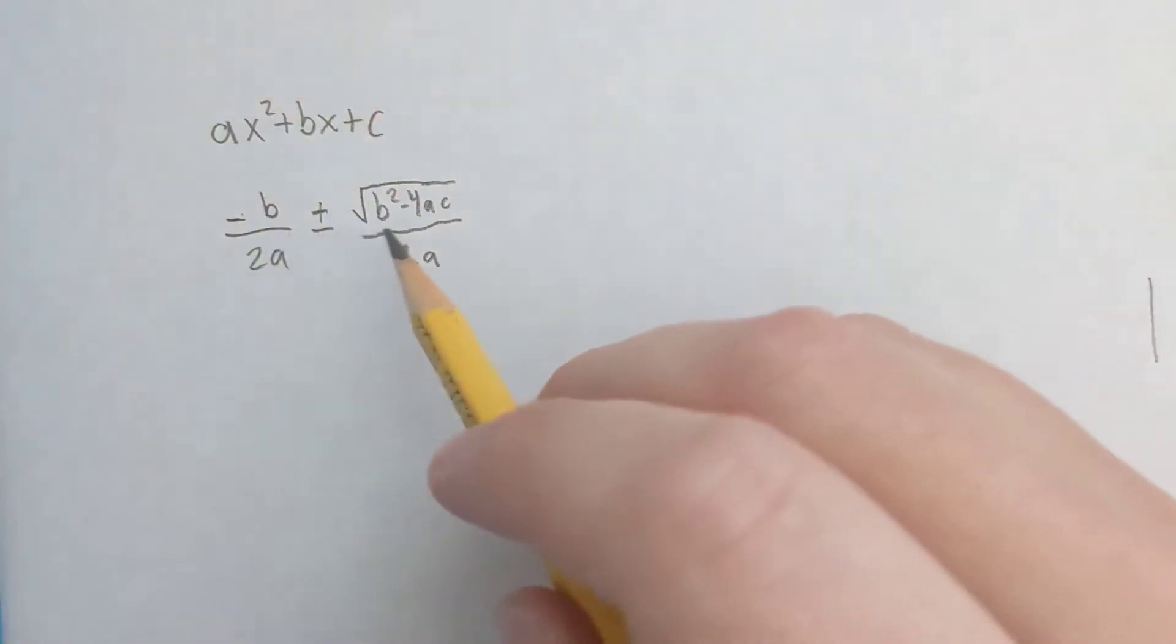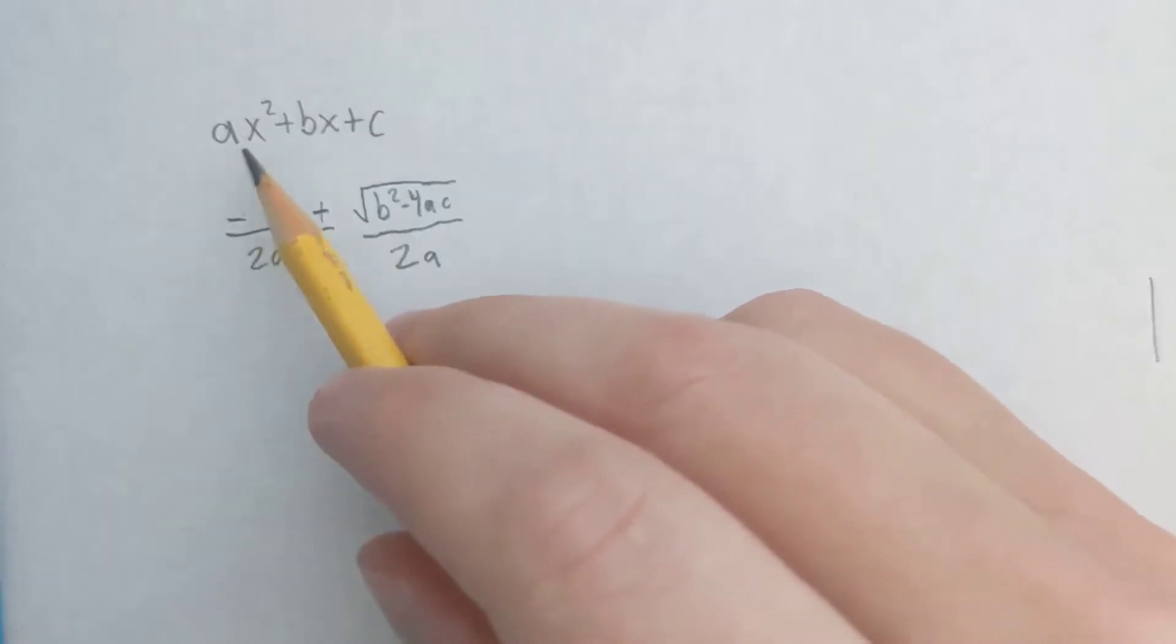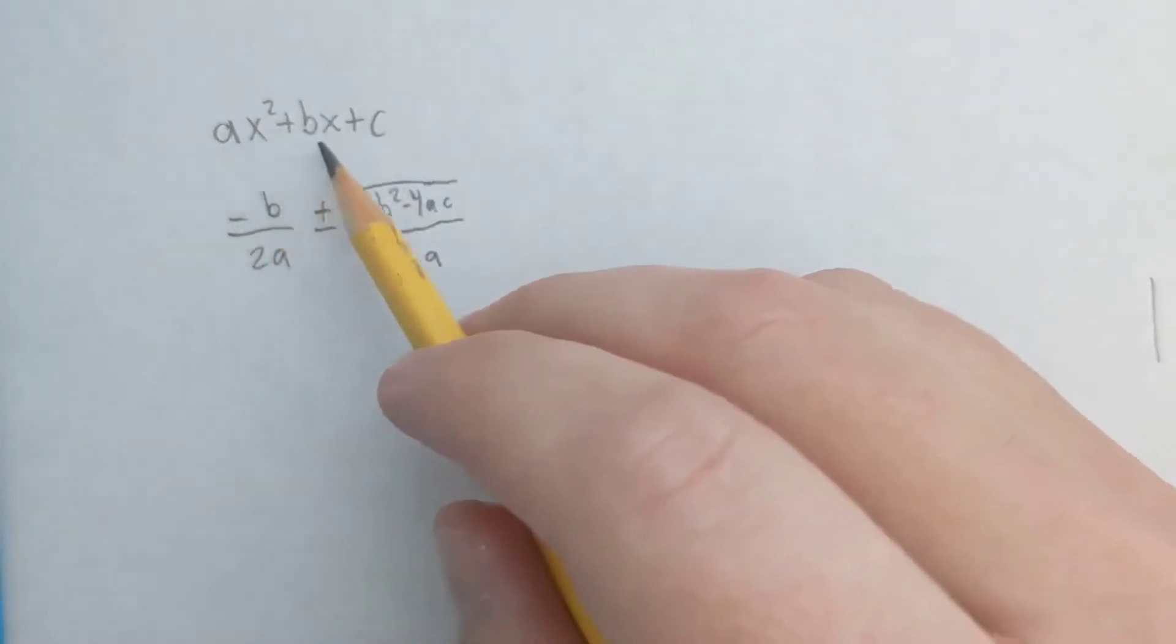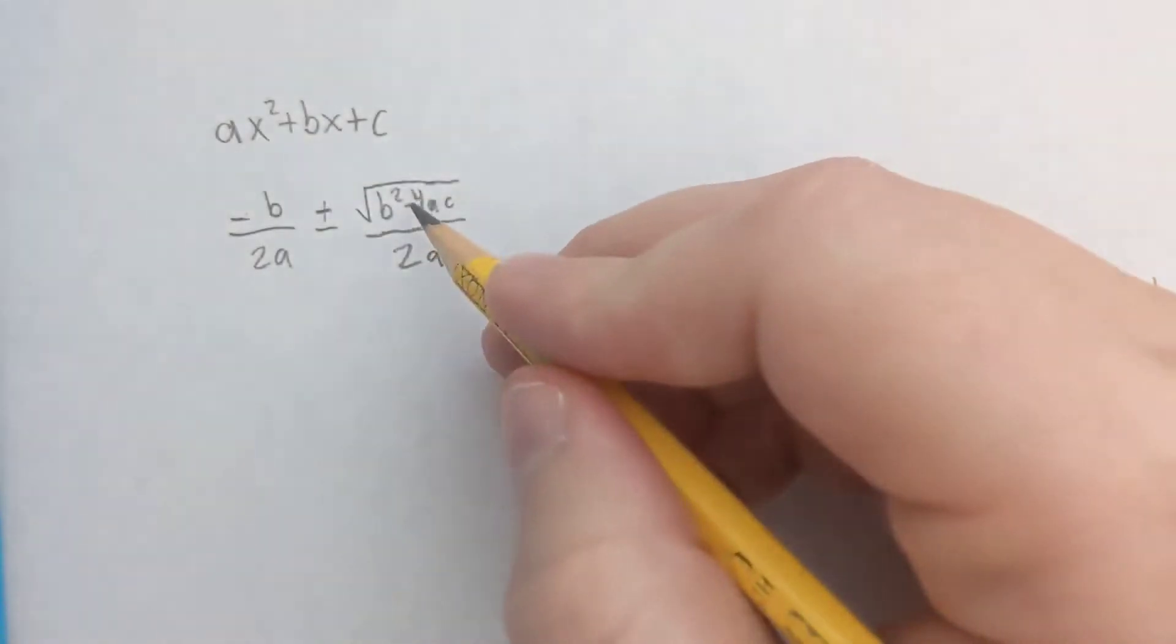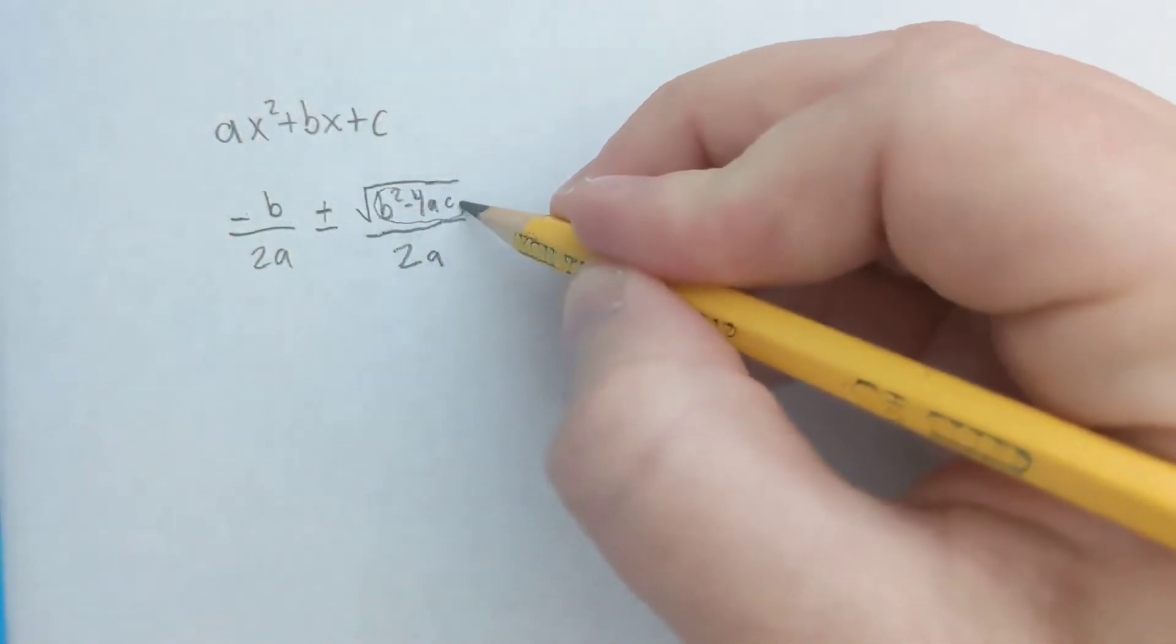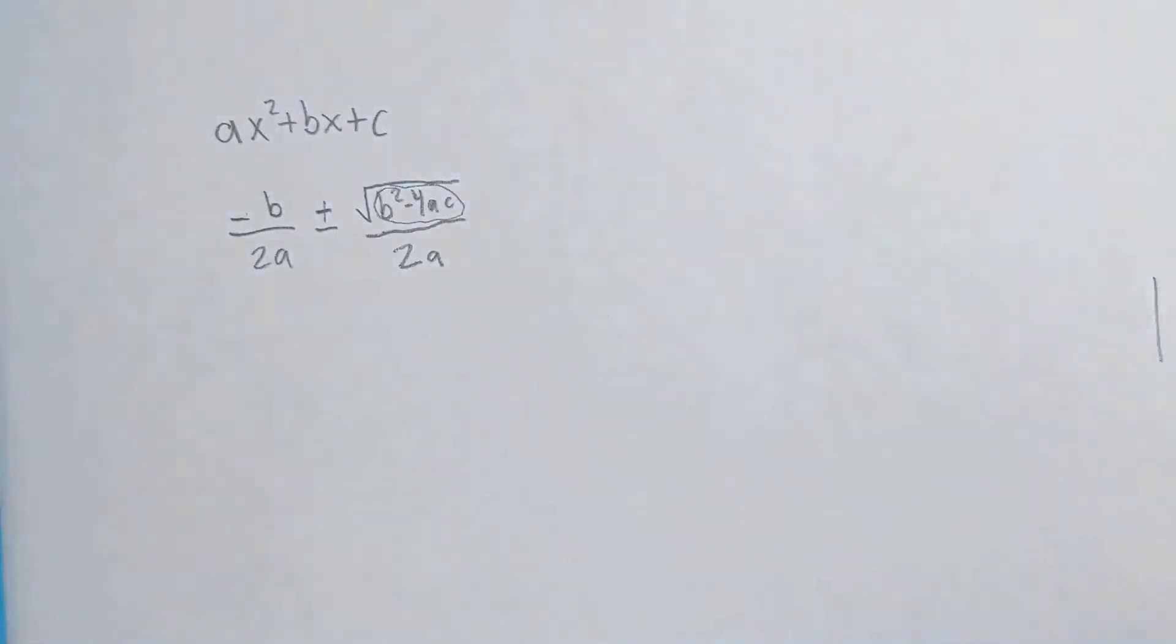So here I've rewritten the quadratic formula. The a, b, and c just refer to constants from a quadratic equation that's written in standard form. And this part under the square root, the b squared minus 4ac part, that is the discriminant.